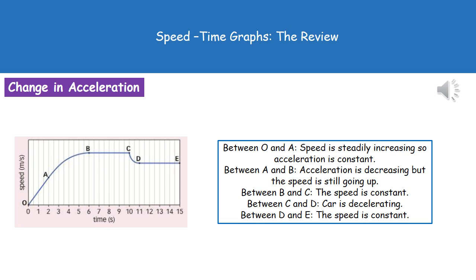When we come to points B to C, what we know there is our speed is constant, because obviously it's not going up on our y-axis anymore, but time is still increasing. So that would be the equivalent of our car traveling at 30 miles an hour.